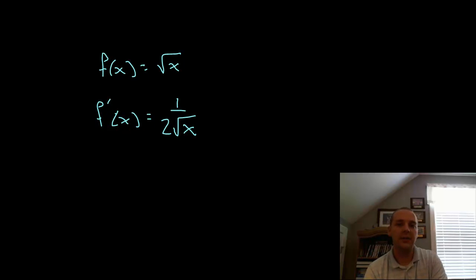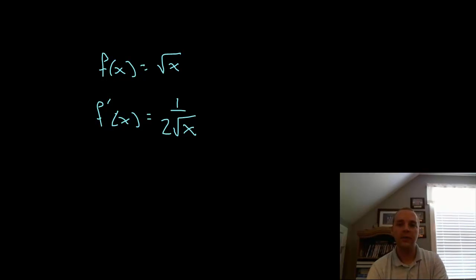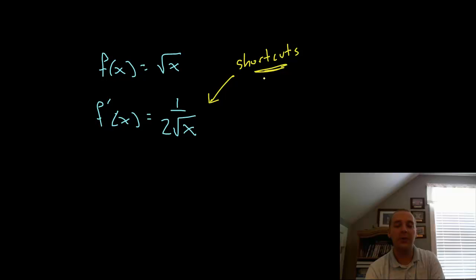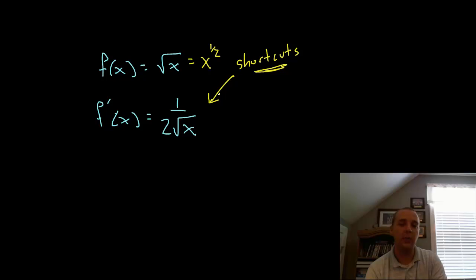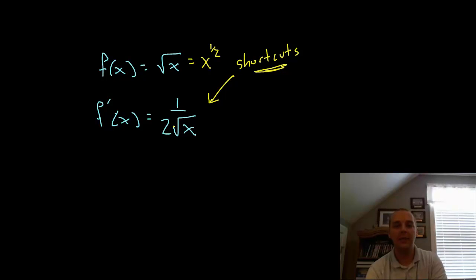What I'd suggest is that in a week or two, after you've covered the derivative rules and shortcuts, come back and watch this video again — you'll see it's the same answer you'd get using one of those shortcuts. If you want to fast forward, this would be under the power rule video, because the square root of x can be written as x to the one half, and there's a shortcut to take the derivative of any expression with a power like x to the one half, x to the fifth, and so on.